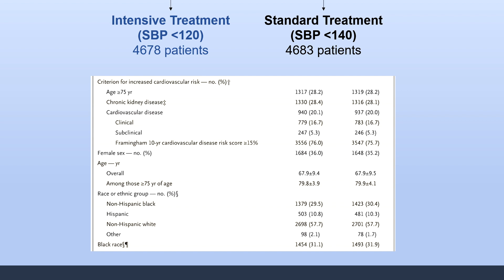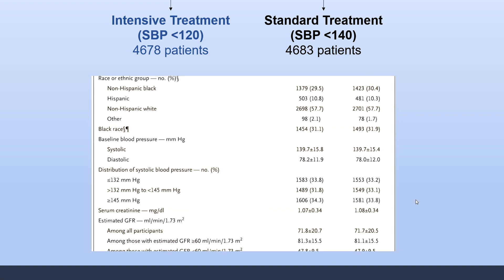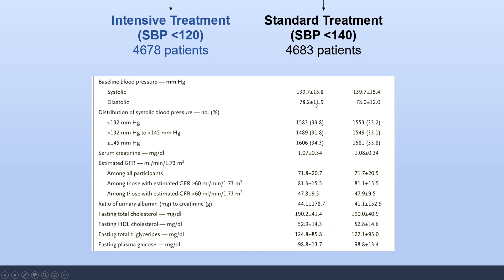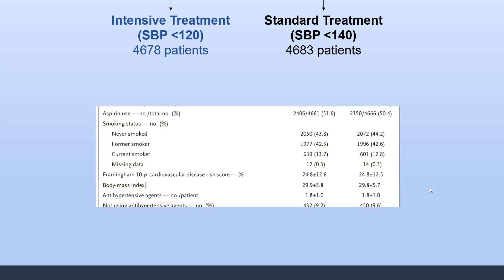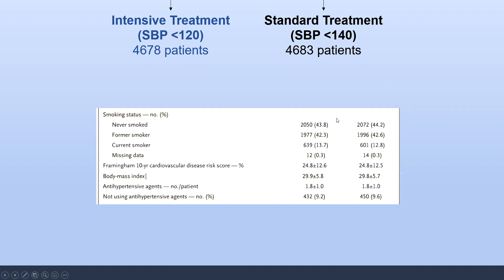Looking at the baseline characteristics, after randomization the patients in both groups were fairly similar in almost all regards, including age, percent with chronic kidney disease, cardiovascular disease, and number of female individuals. The average age was 68 and racial distribution was very similar. Baseline blood pressure among both groups was very similar at around 140 systolic and 78 diastolic, and the distribution of smokers and non-smokers was also very similar.